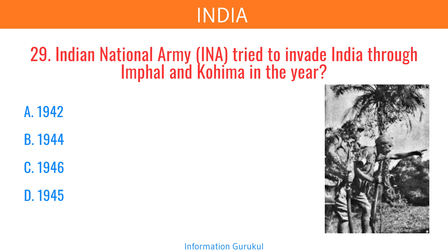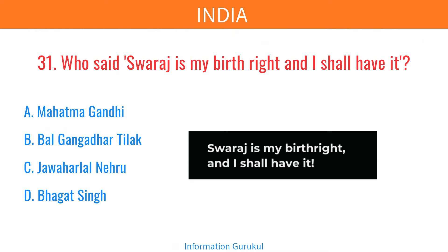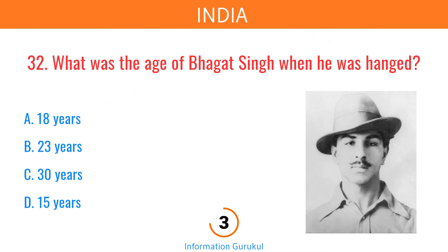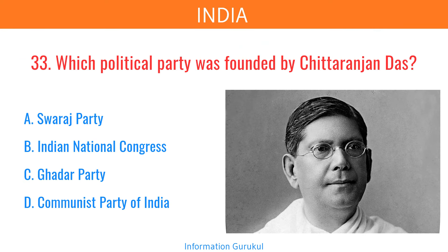The Indian National Army tried to invade India through Imphal and Kohima in the year 1944. Who among the following died in jail due to a hunger strike? Jatindranath Das. Who said, Swaraj is my birthright and I shall have it? Bal Gangadhar Tilak. What was the age of Bhagat Singh when he was hanged? 23 years. Which political party was founded by Chittaranjan Das? Swaraj Party.